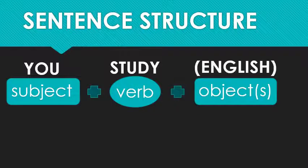Now, depending on your verb, some verbs can stand alone. Other verbs require what's called an object, and that is a different type of noun. There are two types of objects: direct objects and indirect objects. We'll get into that more in future weeks. But keep in mind, some verbs do not want an object, some require an object, and other verbs like 'study' could go either way. So you could say 'you study,' period, end of sentence, or you could say 'you study English,' 'you study history,' 'you study music.'